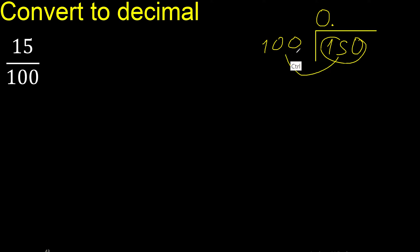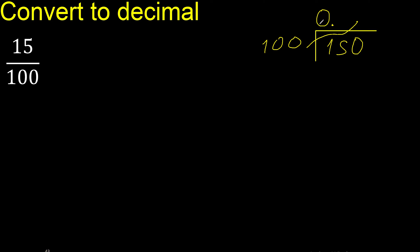15 is not less, therefore 100. Multiply by which number is nearest to 150 but not greater. Multiply by 2 is 200, therefore multiply by 1 is 100.